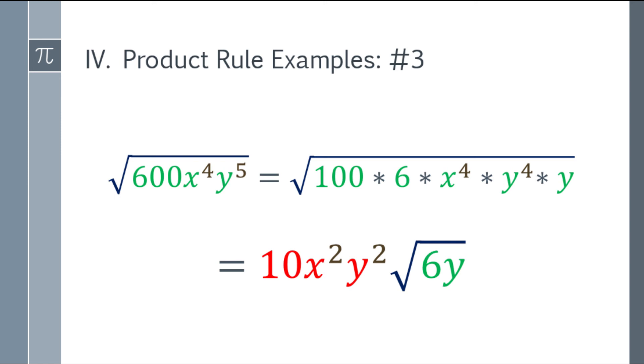Next, y to the 4th. So divide mo ng 2 yung 4. Yung 4, divide mo ng 2, that will be 2. So y squared. Mananatili yung isang y sa loob ng radical sign.